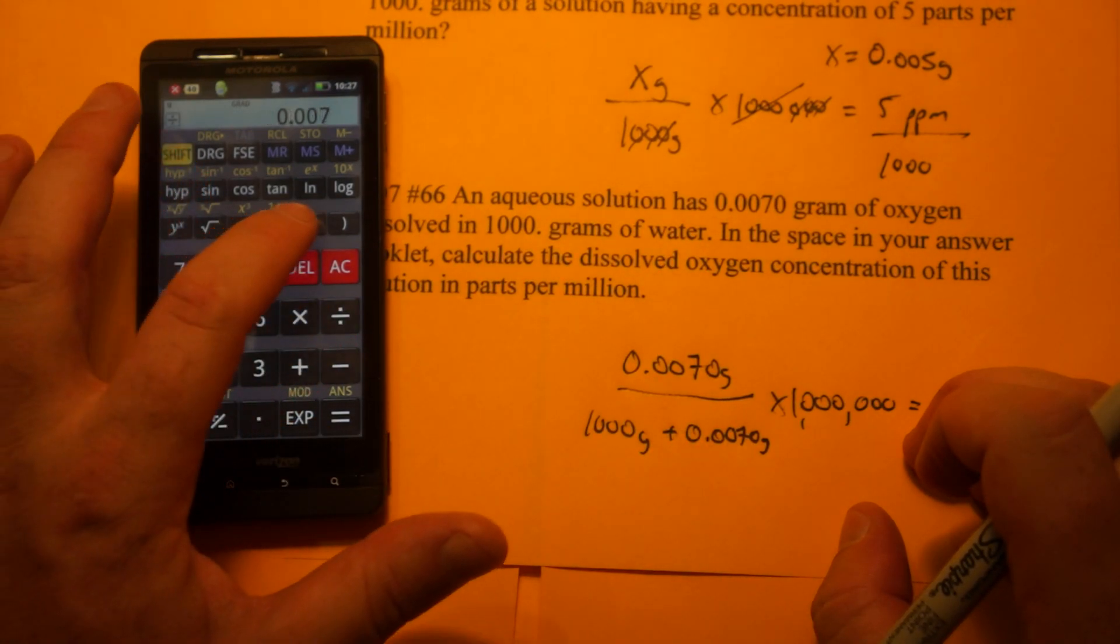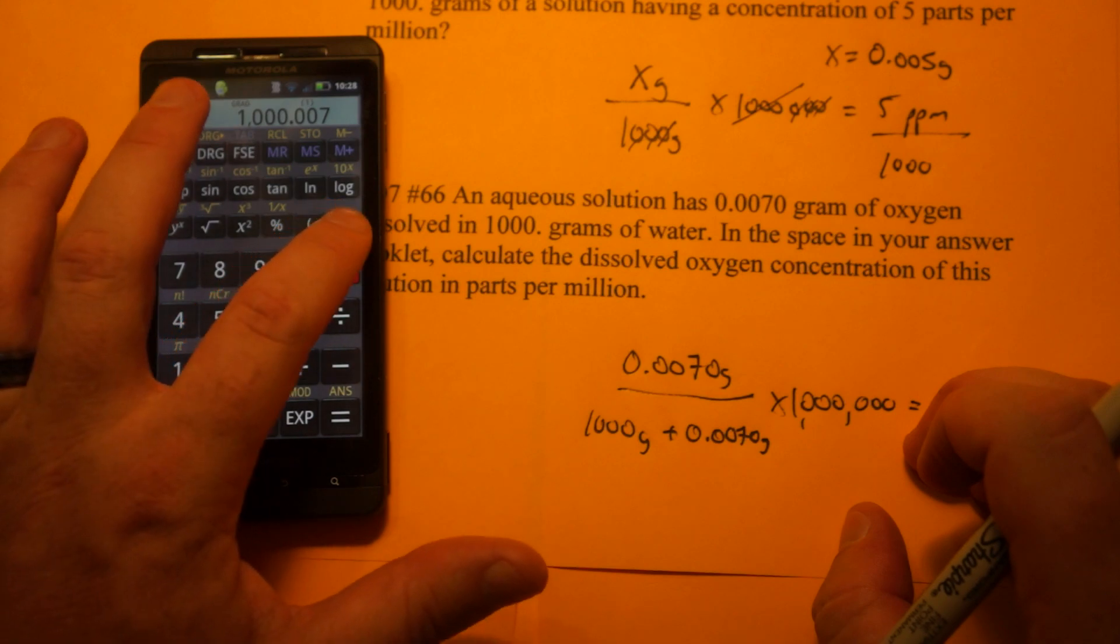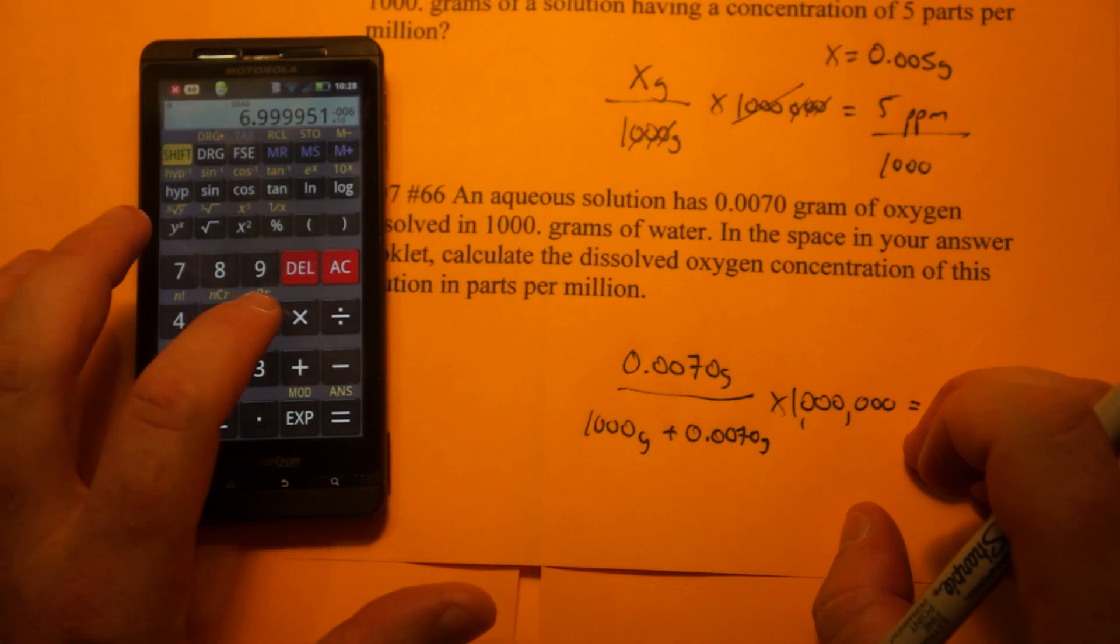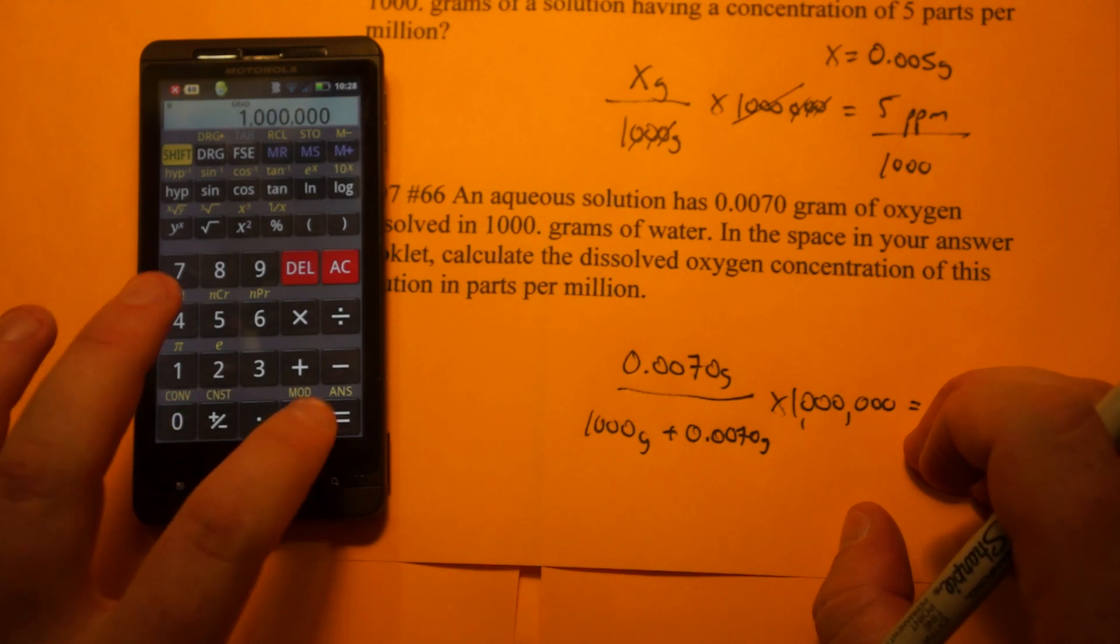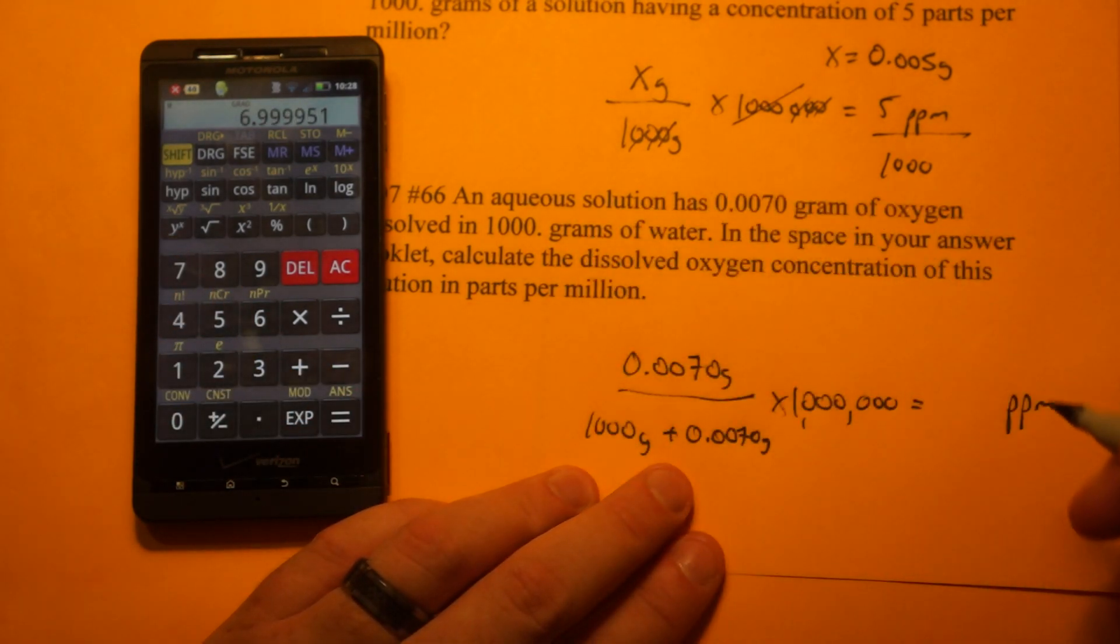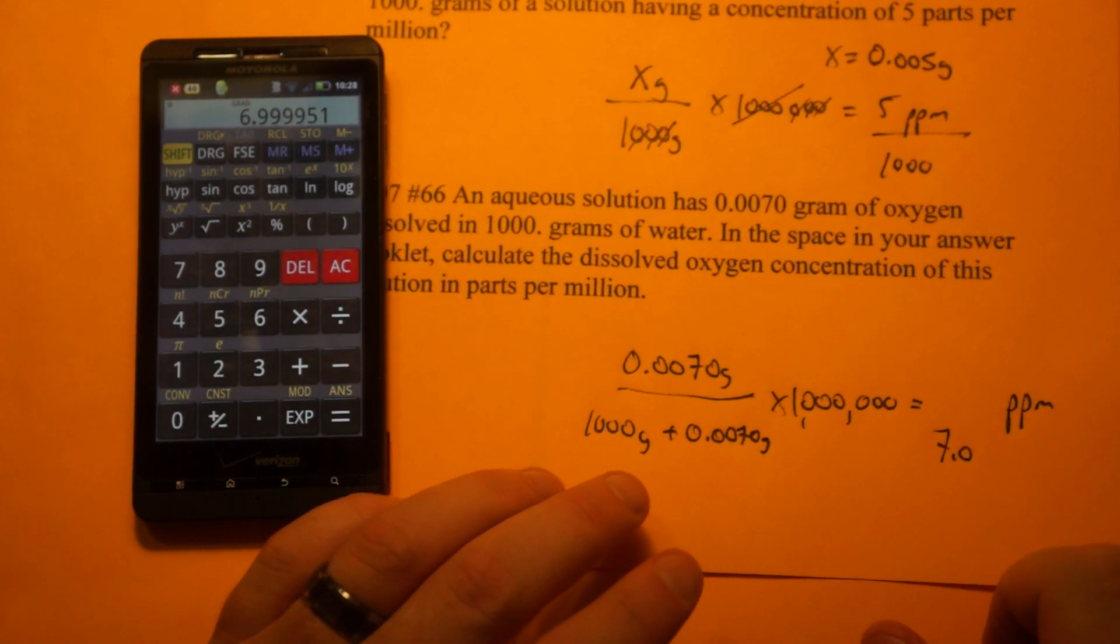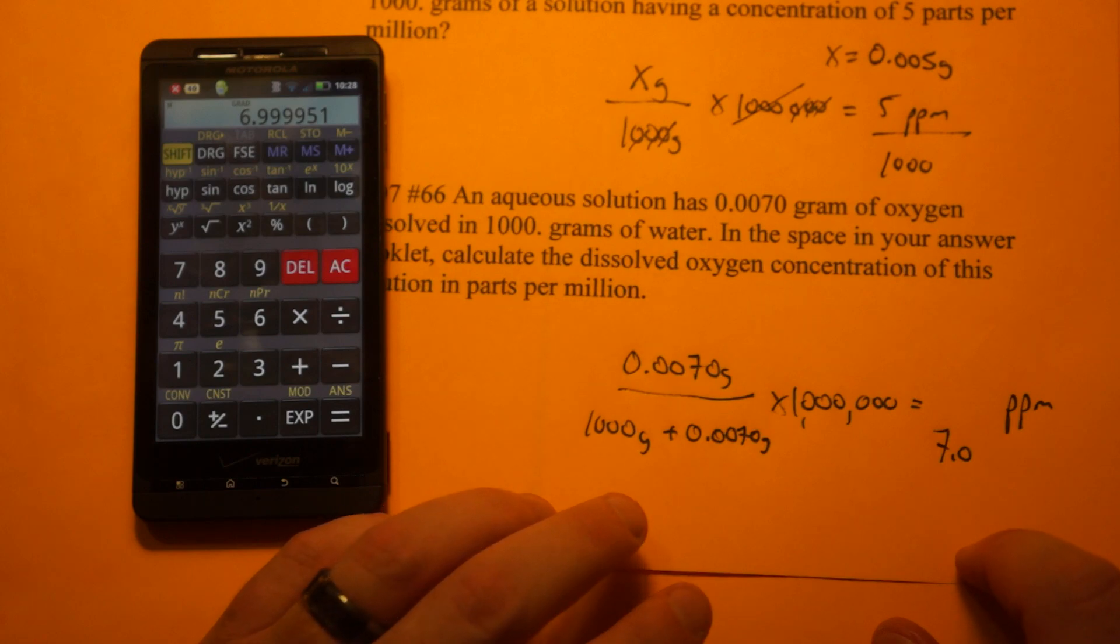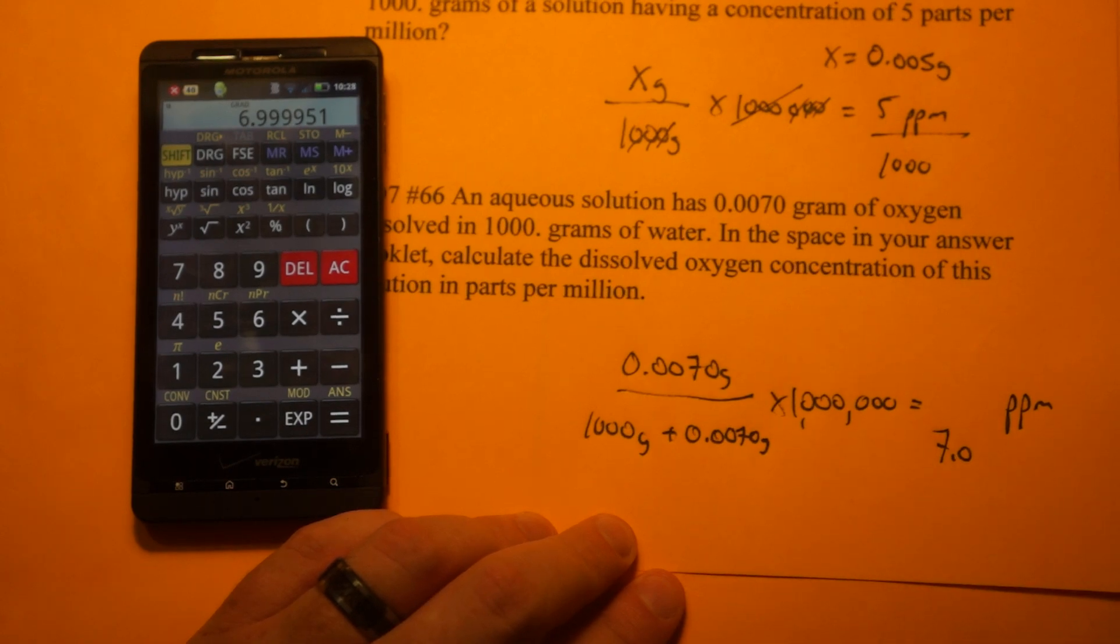That divided by 1,000.007, and we times that by a million, and look, 6.99, well, that comes out to 7.0 parts per million. It didn't have an effect on the parts per million calculation, but it did screw a lot of students up in New York State on that question. So that's how you do parts per million.